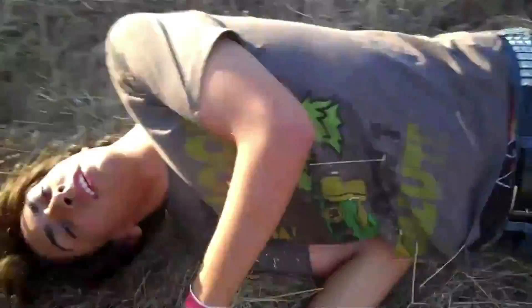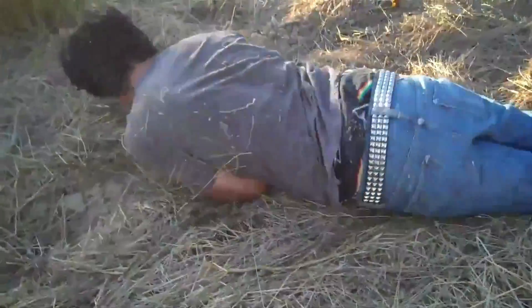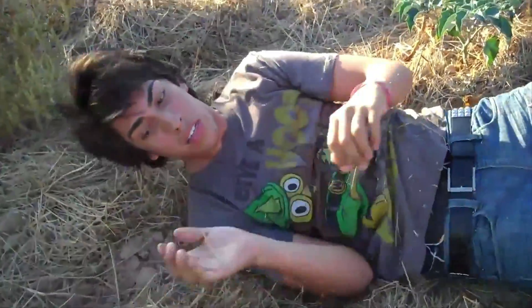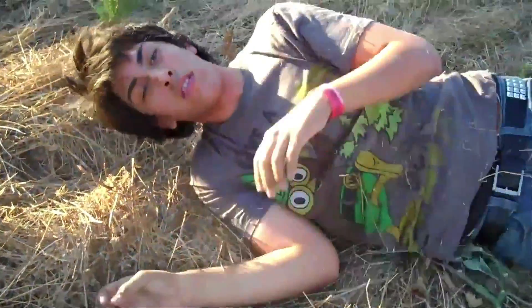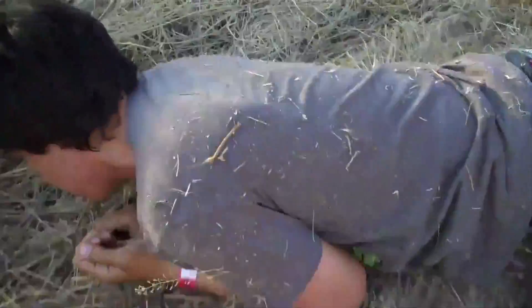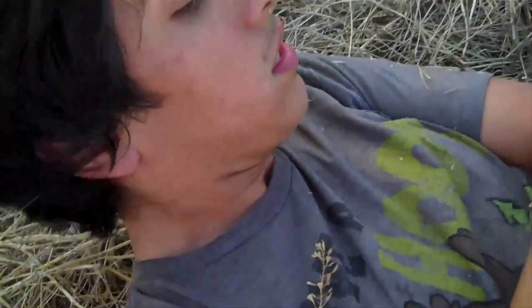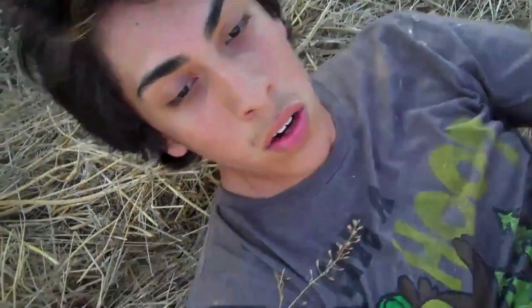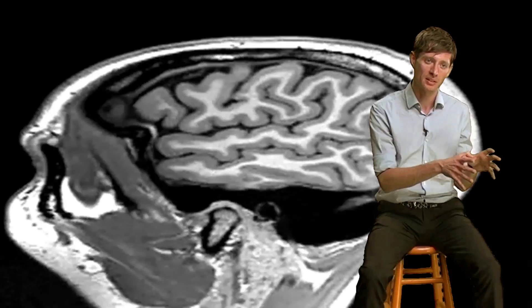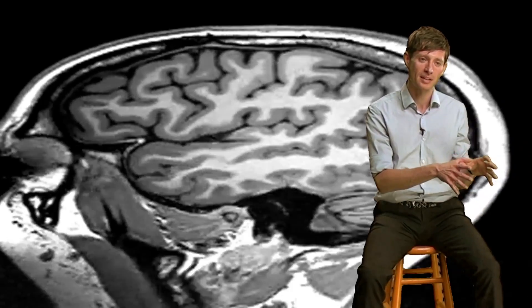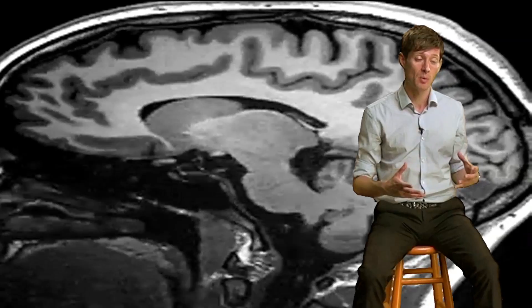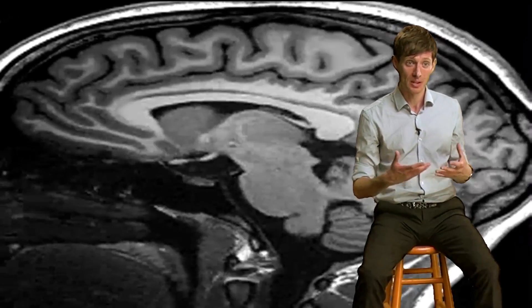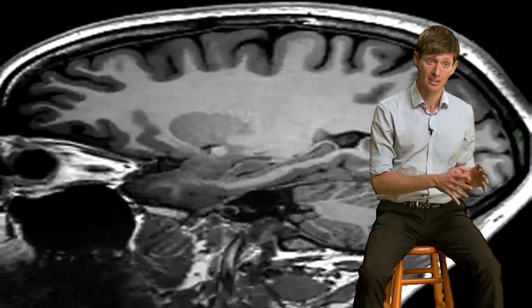People often refer to ego disintegration or ego dissolution. What's interesting about these hubs is that there's increasing evidence they're part of a network which seems to subserve our sense of self, or our ego. When people describe ego disintegration and we look at the biology with neuroimaging, we're actually seeing a literal disintegration of this network — if this network is the self, we're seeing a literal disintegration of the self.